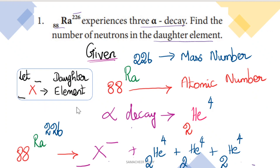88Ra226 experiences 3 alpha decays. Find the number of neutrons in the daughter element. In the question, 88Ra226 undergoes 3 alpha decays. We need to find the number of neutrons in the daughter element. The number of neutrons equals mass number minus atomic number.